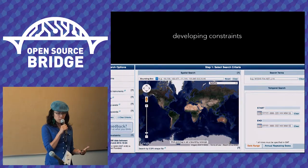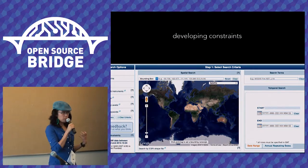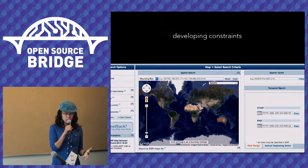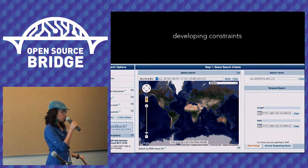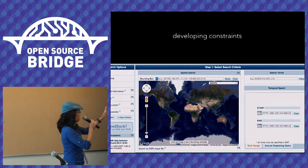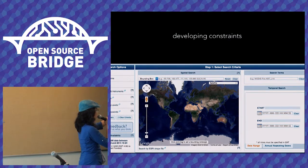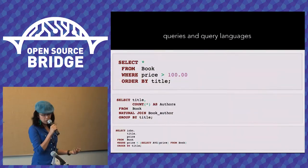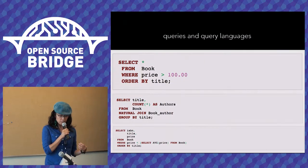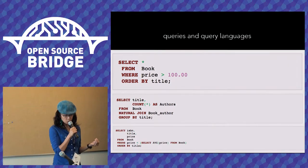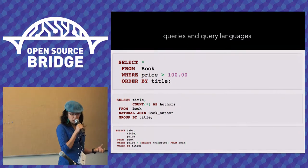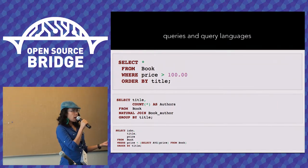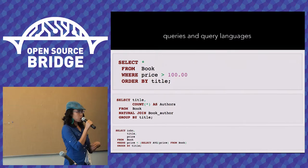An important part of building your project is developing constraints. This is a screenshot from NASA's data repository, Echo Reverb. Even though it's a bit cut off at the edges, you can see there are many ways to constrain your search: spatial search, temporal search, by satellite, or by the level of data acquired. Some of my students have found NASA data really useful for bringing multi-spectral data into the realm of quantified self.